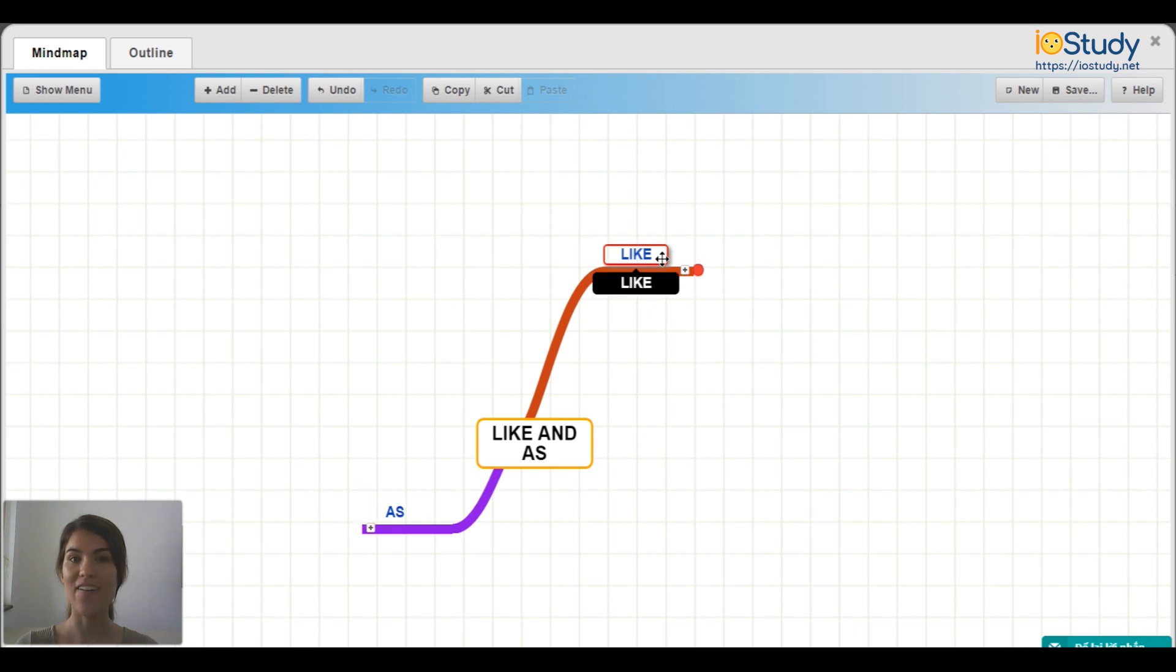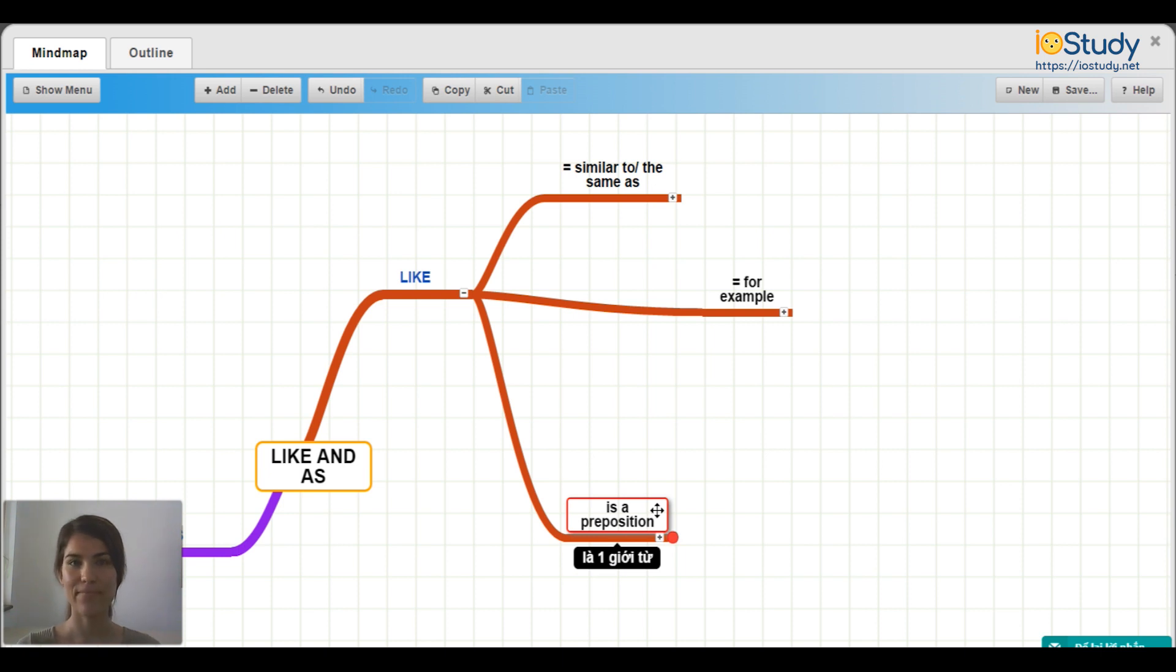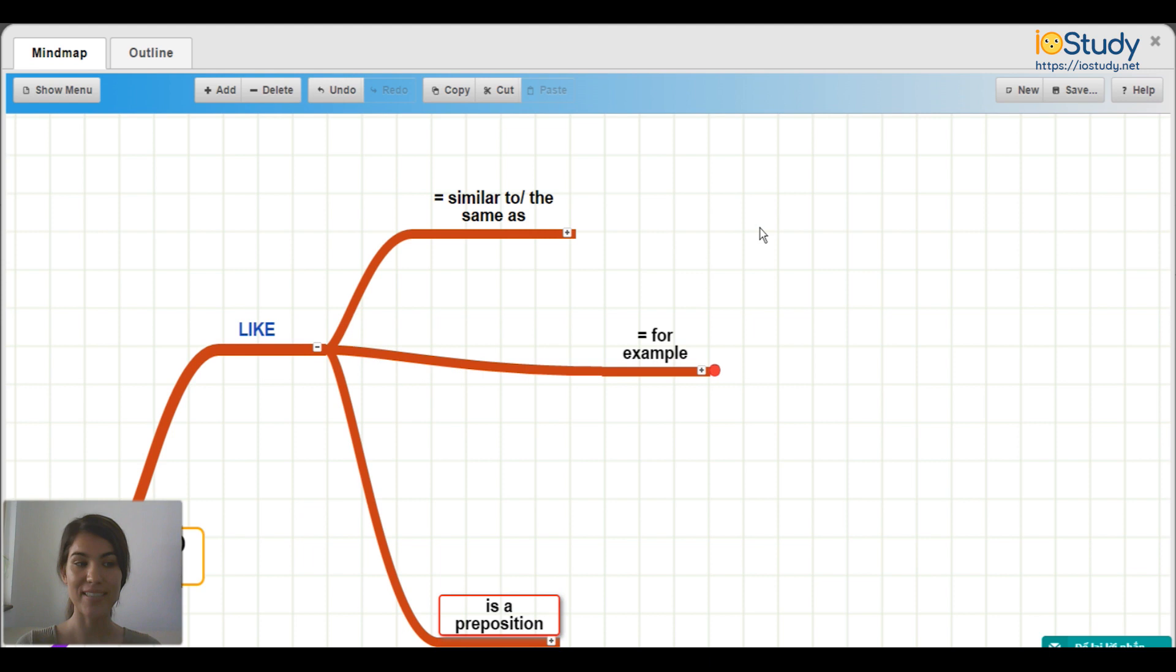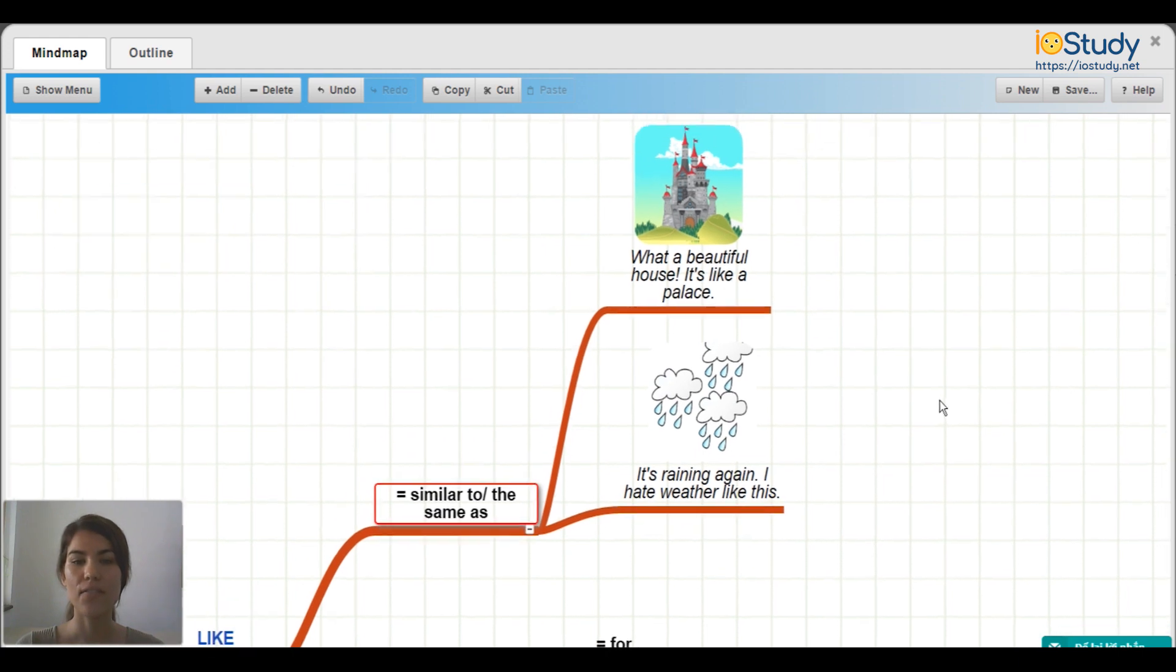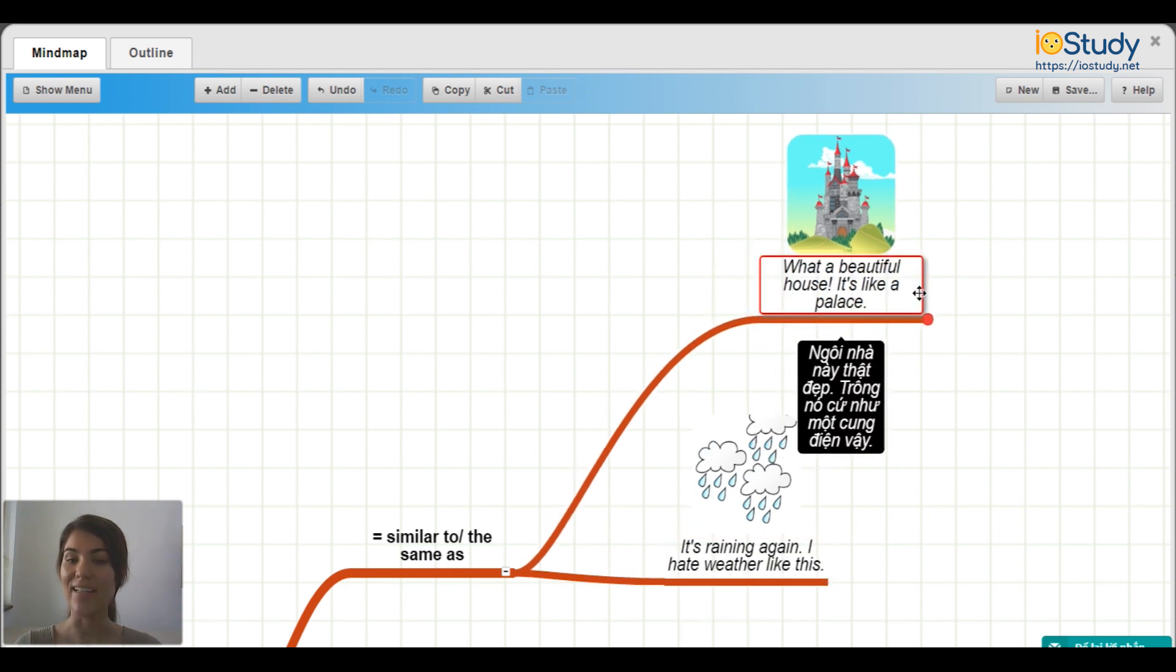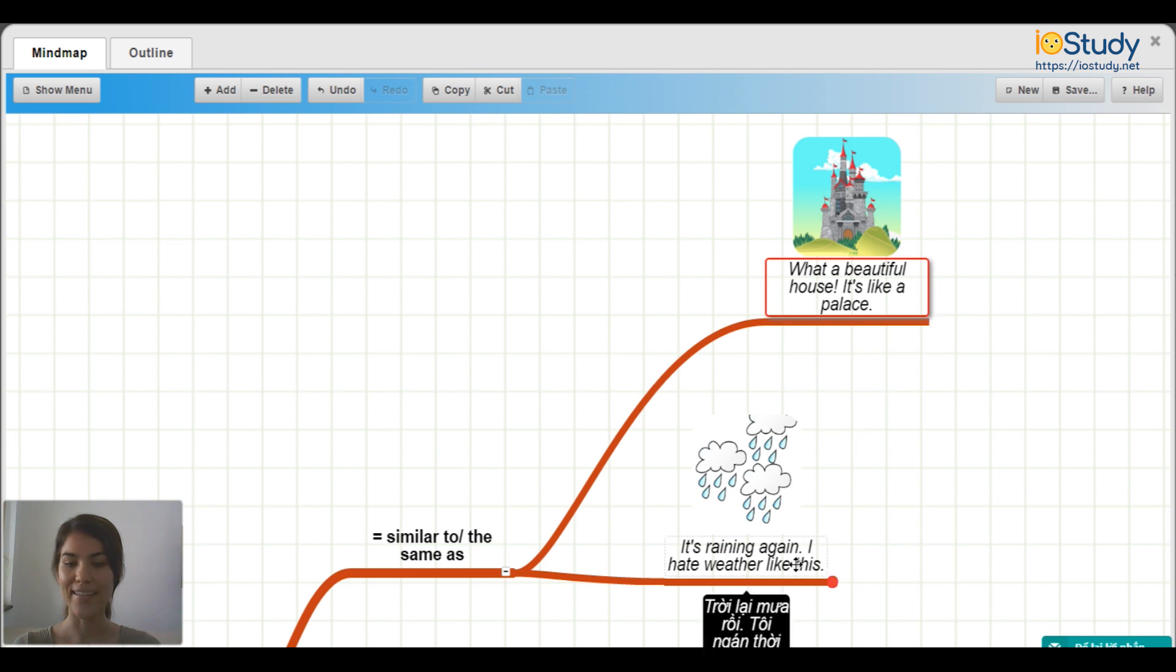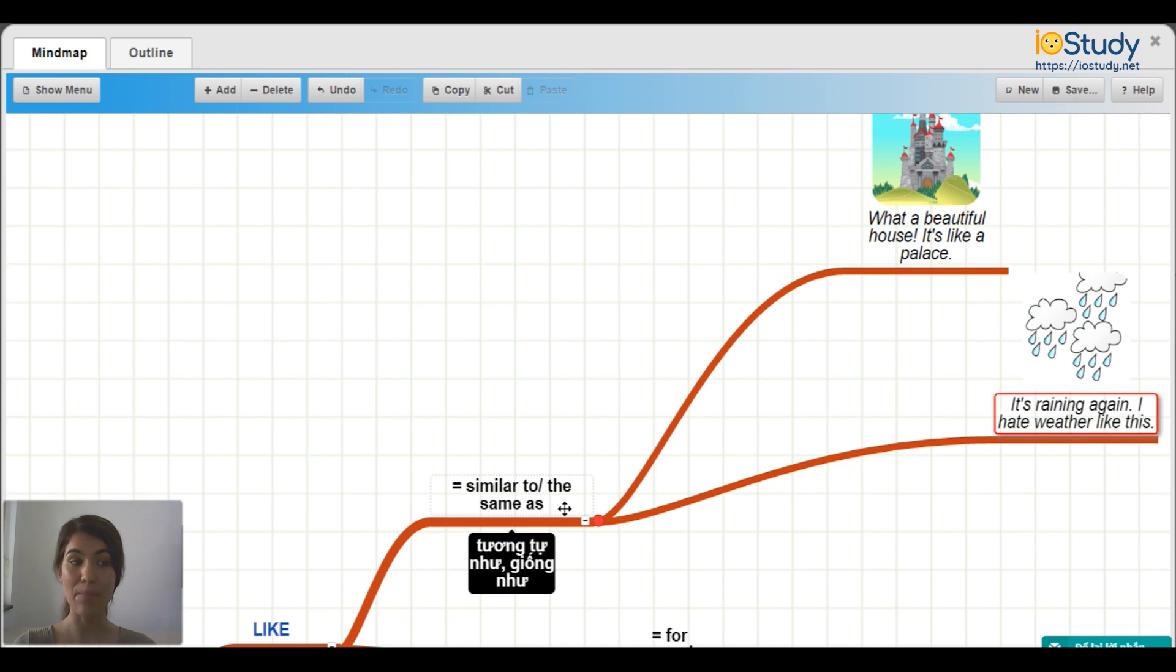So let's first talk about like. We use like to say similar to or the same as. We can also use it as for example. And like is a preposition. So let's look at some examples for similar to and the same as. For example, what a beautiful house. It's like a palace. And it's raining again. I hate weather like this. So we're using both of these to talk about something that is similar to or the same as.